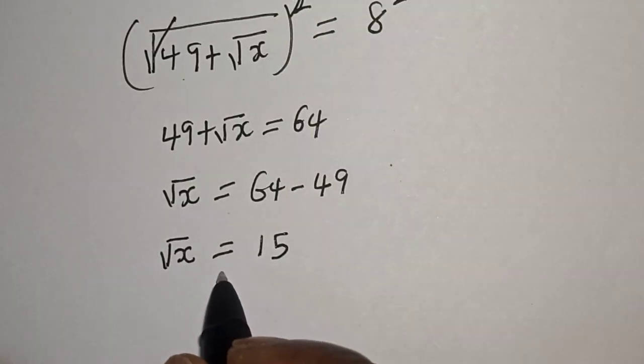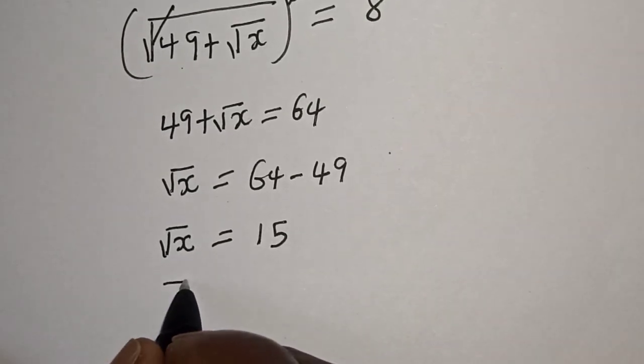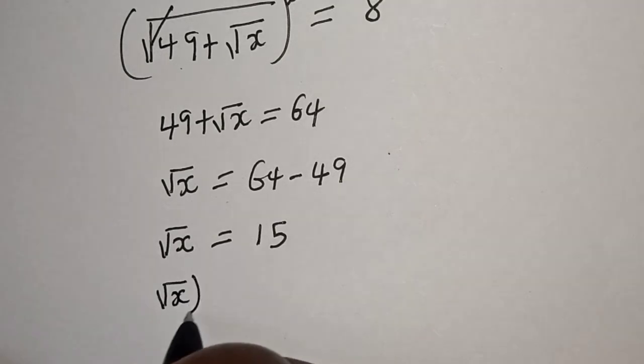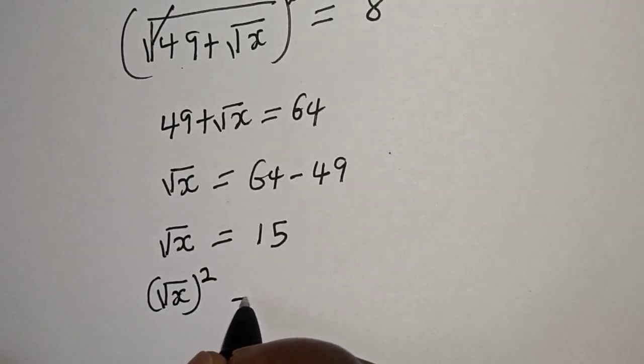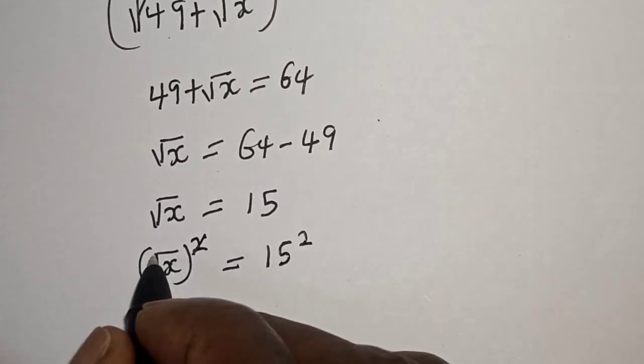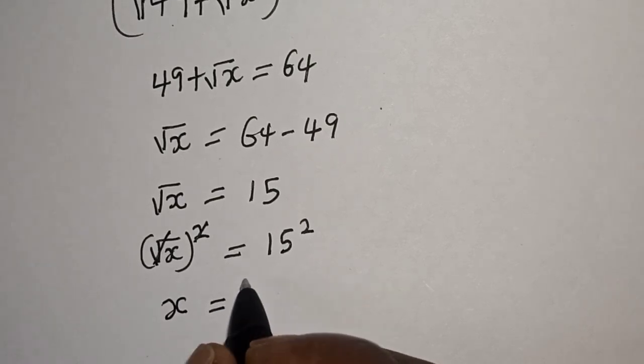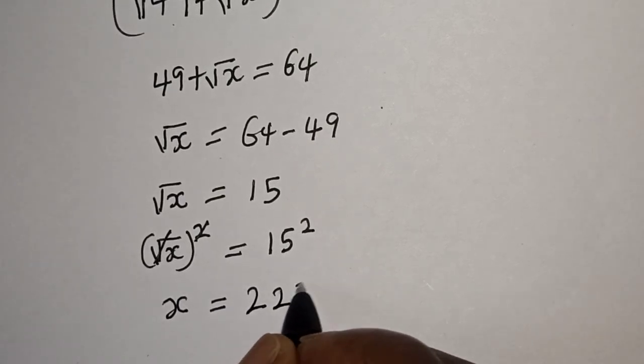Now, let's square both sides again in order to get the value of S. We have square root of S square is equal to 15 square. This one will cancel this. S is equal to 15 square is 225.